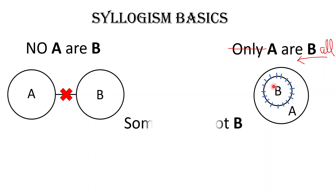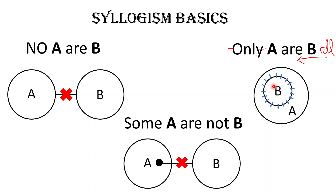The last basic is: Some A are not B. This is denoted with some elements of A outside of B. The black dots refer to some elements that belong to circle A and A only — they are not in B. That is what this statement means.